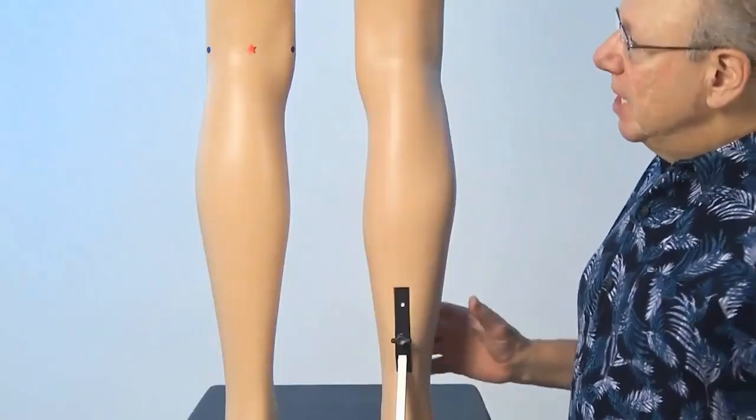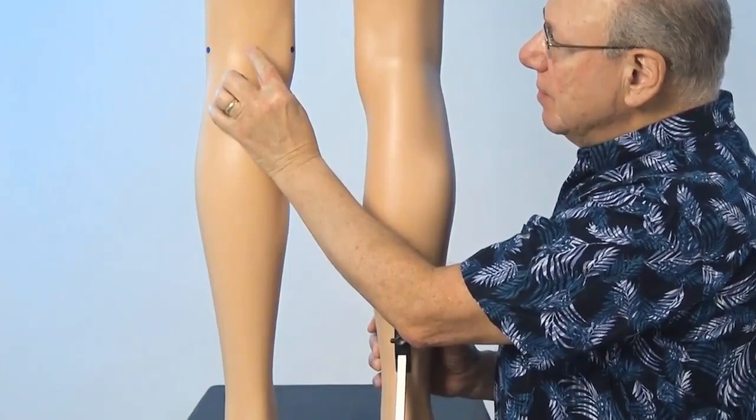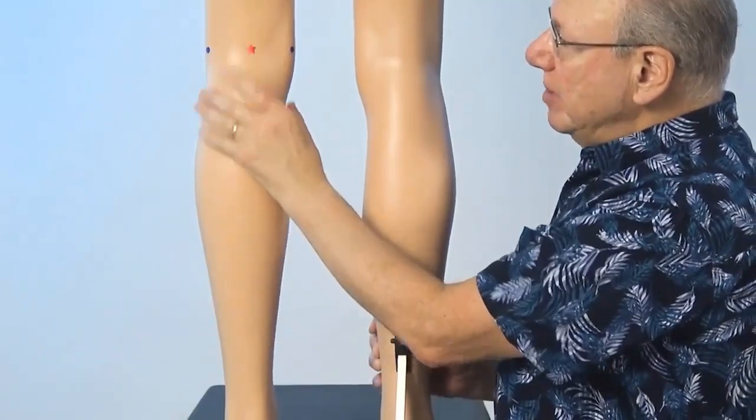To locate bladder 40, find the midpoint of the back of your knee right about here.